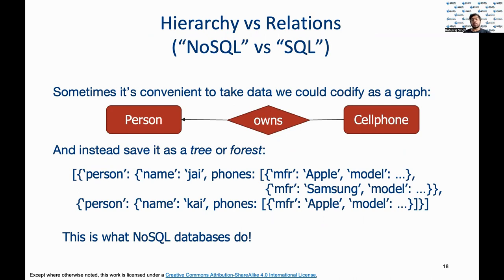Even for acyclic graphs, to represent it in a tree form, we would need to replicate portions of it. For example, suppose that two people own the same phone. To encode that, we would need to replicate the information about the phone in each person's entry. Alternatively, we could give an ID to each phone and just store the ID of the phone within the phone's field rather than the complete information. We would also have another list of information about phones, their IDs, and complete information. This latter representation would eliminate redundancy and update anomalies.